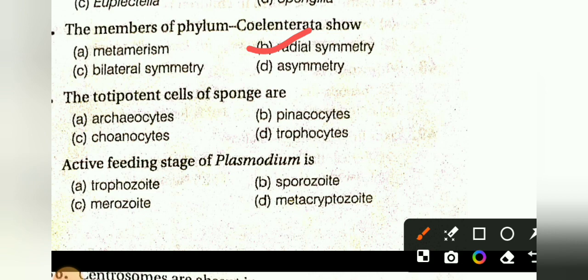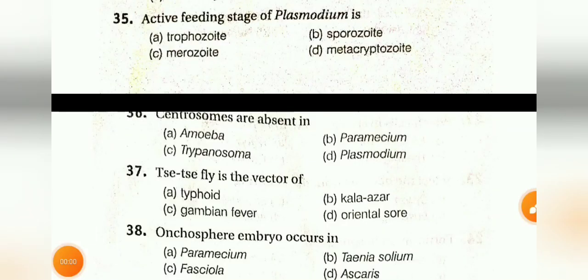The totipotent cells of sponges are: Archaeocyte, Pinacocyte, Choanocyte, or Trophocyte. The answer is Archaeocyte. Archaeocytes are the totipotent cells of sponges.